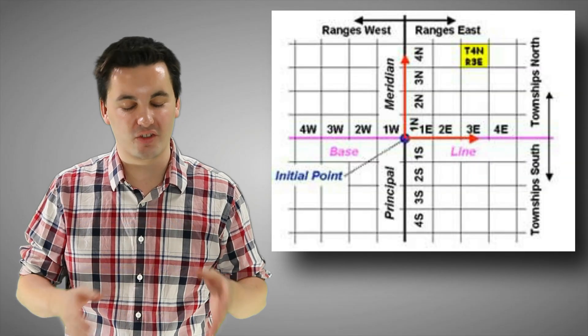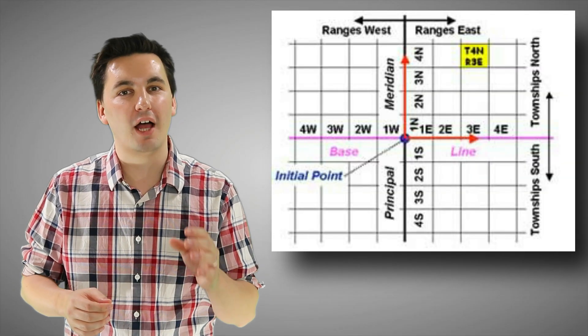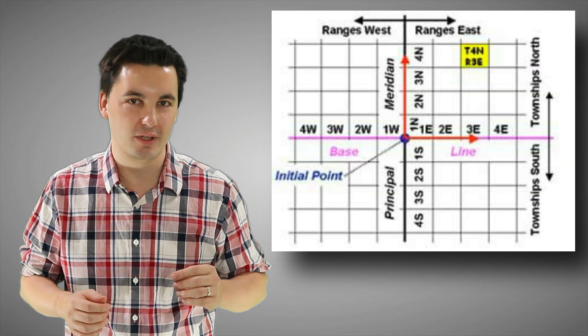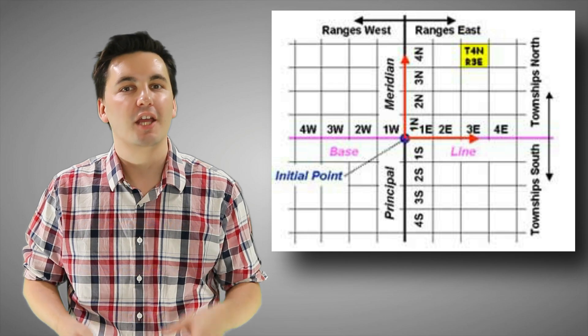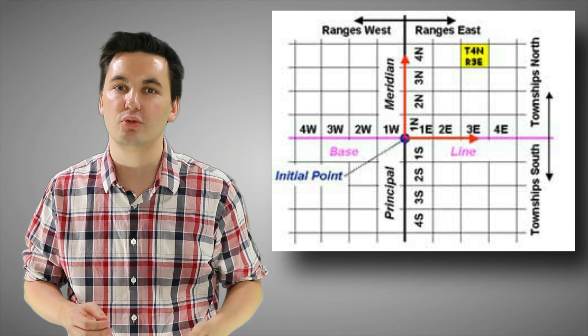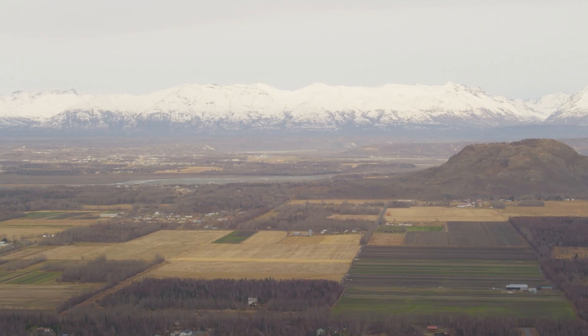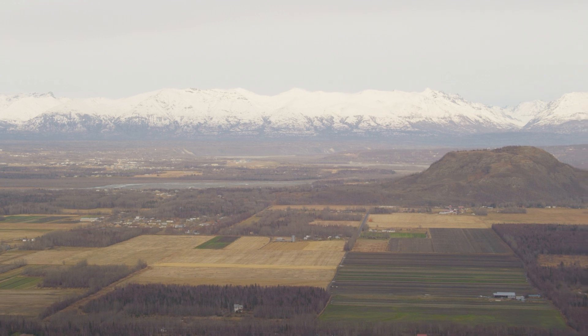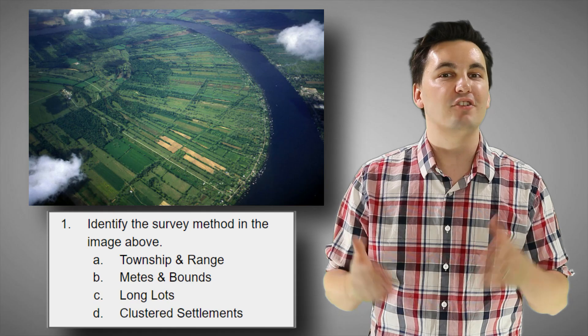Our last survey method is township and range, which utilizes longitude and latitude and a baseline. Here the townships are going north to south, while the range goes west to east. This creates a grid-like pattern across the land.